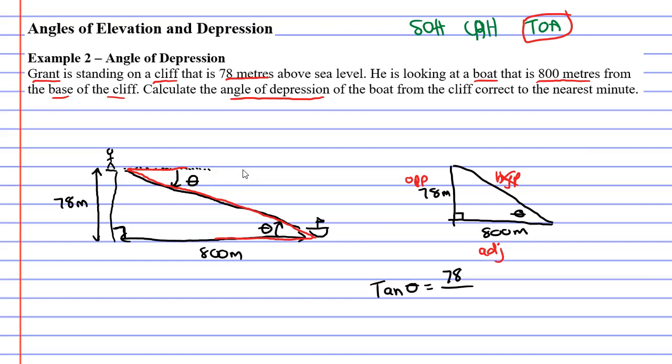Okay, now we need to use our inverse function. We want to bring tan to the other side because we're trying to find theta or the angle. And to do that we need to use inverse tan, which is tan with a little negative one on it, and our fraction must go in brackets.